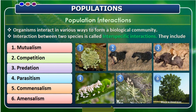In mutualism, both species are benefited. In competition, both species are adversely affected. In predation, one species is benefited whereas the other is adversely affected. In parasitism, also one species is benefited and the other is adversely affected. In commensalism, one species is benefited and the other is neither benefited nor affected. In amensalism, one is affected and the other is neither benefited nor affected.